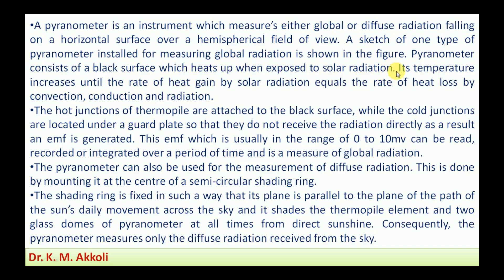The black surface heats up when exposed to solar radiation; its temperature increases until the rate of heat given by solar radiation equals the rate of heat lost by conduction and radiation. The hot junctions of the thermopile are attached to the black surface, while the cold junctions are located under the guard plate so that they do not receive radiation directly. As a result, an EMF — electromotive force — is generated between the hot and cold junctions.